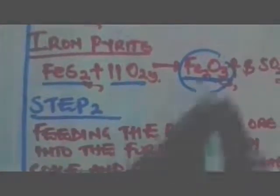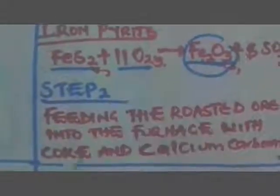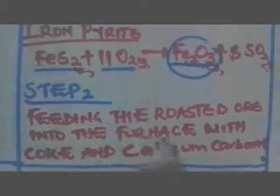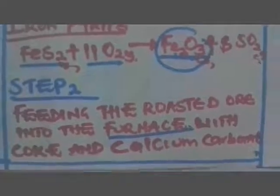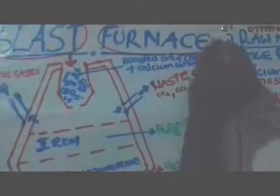Now step two. We are going to feed what we have obtained — the iron(III) oxide — into a tank which we call the blast furnace. So we are feeding the ore into the blast furnace. Try to look at this properly. The blast furnace is a tank which is used to purify the ore.